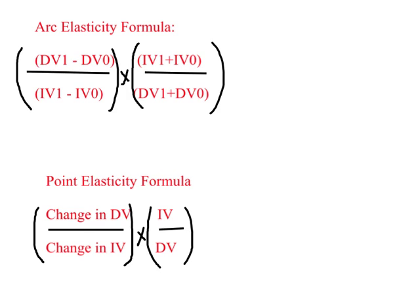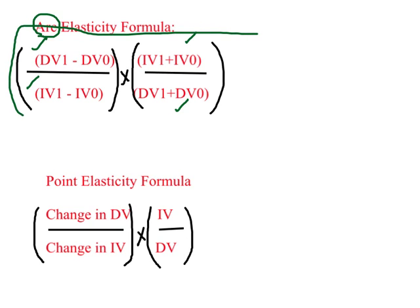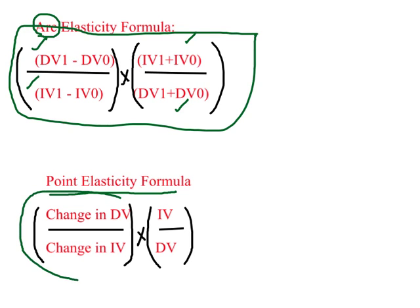Here is a summary of the two elasticity formulas. Arc elasticity — for larger changes — is change in dependent variable divided by change in independent variable, times the sum of independent variable values divided by the sum of dependent variable values. Point elasticity — for smaller changes — is change in dependent variable divided by change in independent variable (given by the slope of the equation), multiplied by the value of independent variable divided by the value of dependent variable.